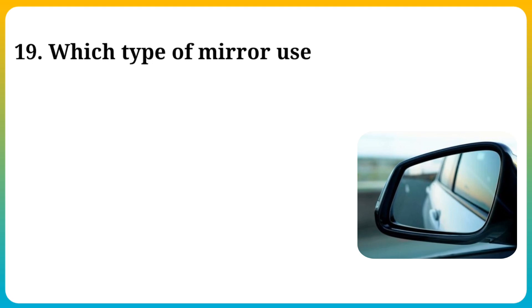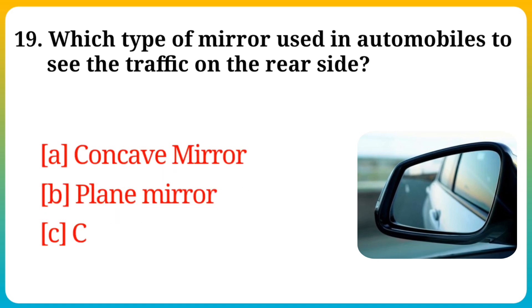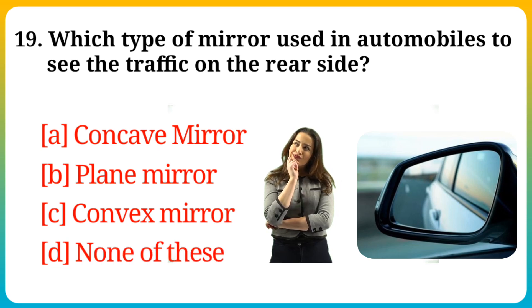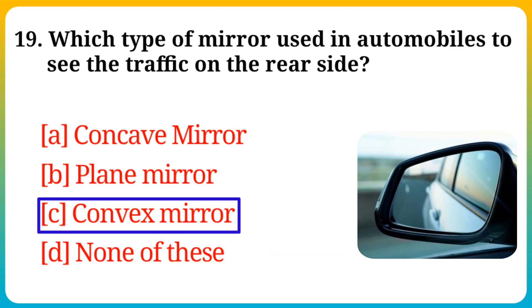Question number 19. Which type of mirror is used in automobiles to see traffic on the rear side? Option A: Concave mirror, B: Plane mirror, C: Convex mirror, D: None of these. Answer is option C: Convex mirror.